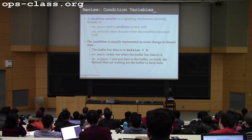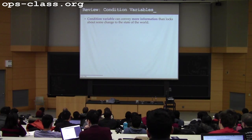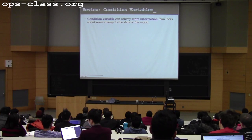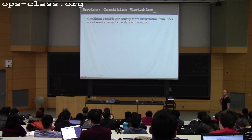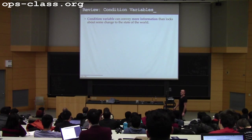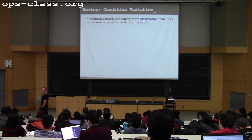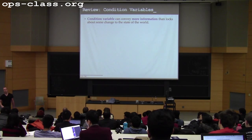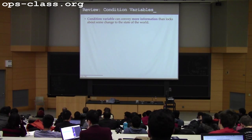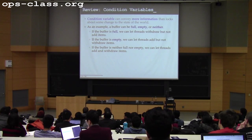Condition variables expand your vocabulary beyond just locks. Really all a lock tells another thread is: I'm busy in this critical section, you have to wait. With a condition variable, you can inform threads about a variety of different things. We'll come back to this in the buffer example.